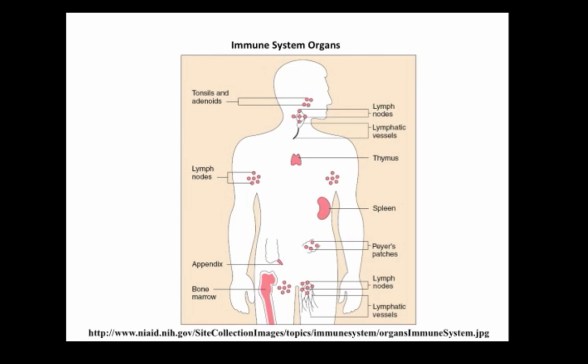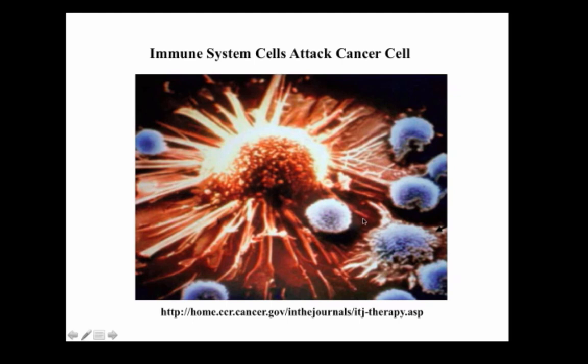Yet another complex system is the immune system, which is distributed across the body involving many different organs and trillions of cells moving around in the bloodstream or lymph stream, protecting and healing the body from damage or disease. Here is a picture of immune cells — the ones in blue — attacking a cancer cell in the center. Like the ants we saw before, immune system cells communicate through chemical signals and work together without any central control to launch coordinated attacks on perceived threats. The population of immune cells can also adapt itself in response to what it perceives in its environment — another key characteristic of complex systems.